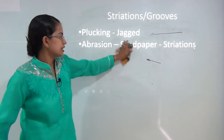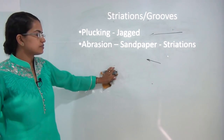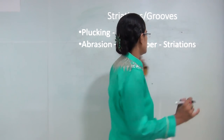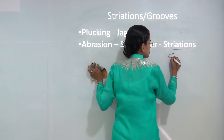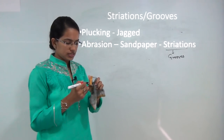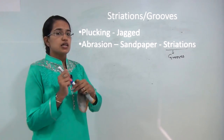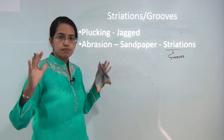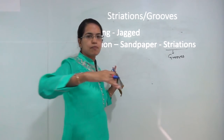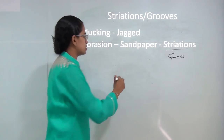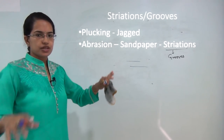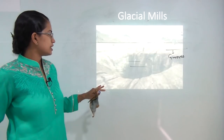Abrasion creates the effect of sandpaper as discussed. These create striations or grooves — minor fractures as compared to crevasses. Crevasses are bigger and larger in size as compared to striations. Striations are minor fractures that appear on the surface and are again one of the topographical features of glacial areas.